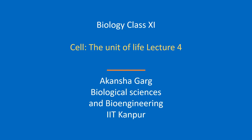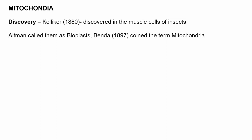Today we will be studying the remaining organelles present in the cell. Starting with mitochondria: mitochondria was discovered by Kolliker in 1880. He discovered mitochondria in the muscle cells of insects. Altman then named them bioplast. Benda in 1897 finally coined the term mitochondria.